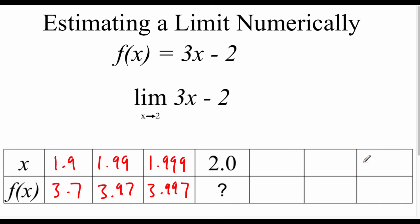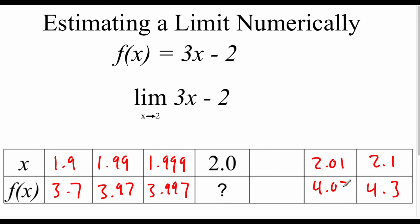Now approaching 2 from the right-hand side, starting at 2.1 — plugging that in, we get about 4.3. Moving closer to 2, we go to 2.01. Plugging that in, we get about 4.03. Moving even closer with 2.001, we get 4.003.